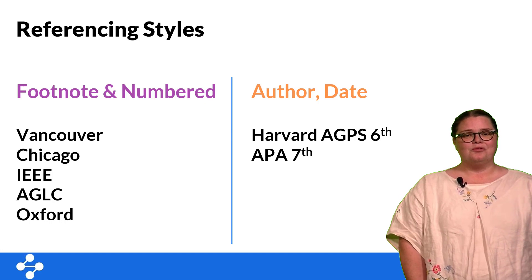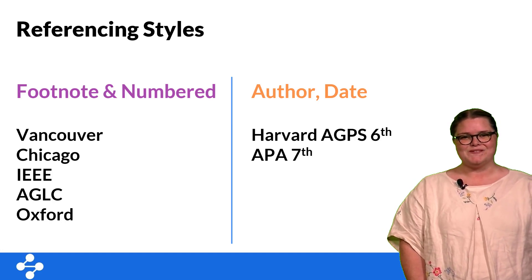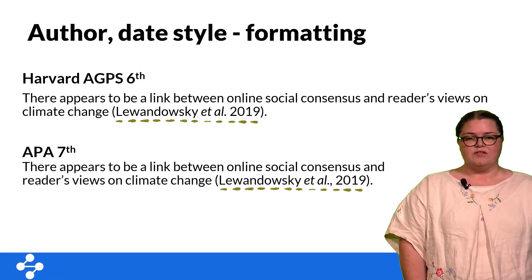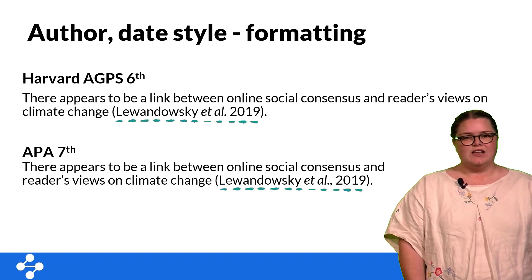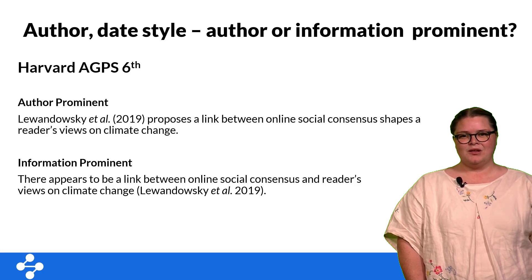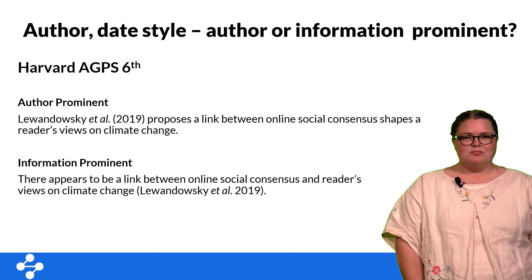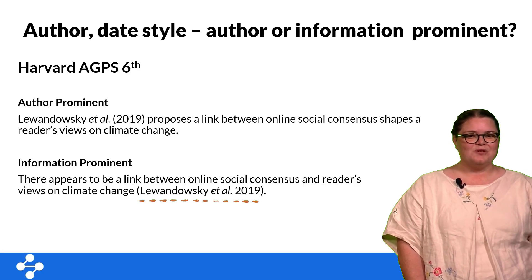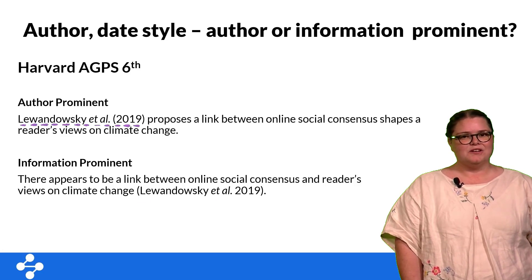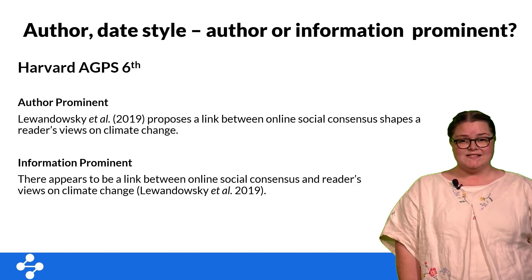There are subtle but important formatting differences between these styles, so do make sure to follow the guide for the specific style that you're using. Common author-date styles include APA and Harvard AGPS 6, which require the author's surnames and publication date to be included in text. Author-date styles such as Harvard and APA allow you to create citations in both information-prominent, where the author's names are not included in the sentence, and author-prominent, where the author's names are included in the sentence — and this will help you work out where the reference should be placed.